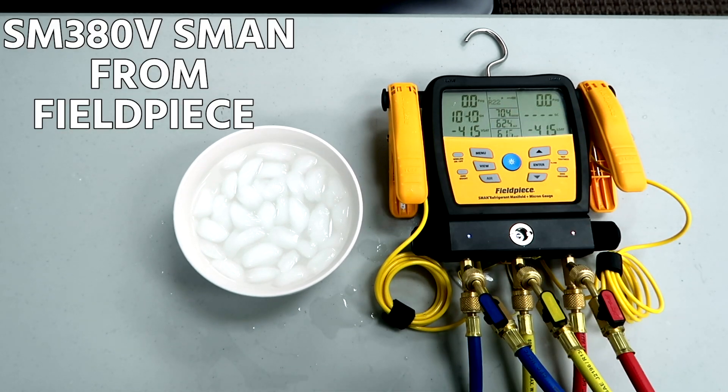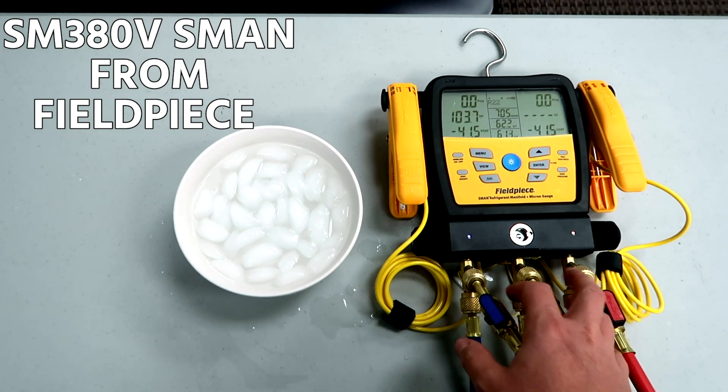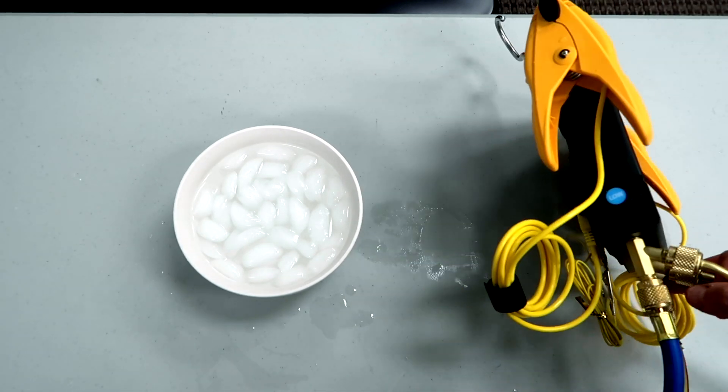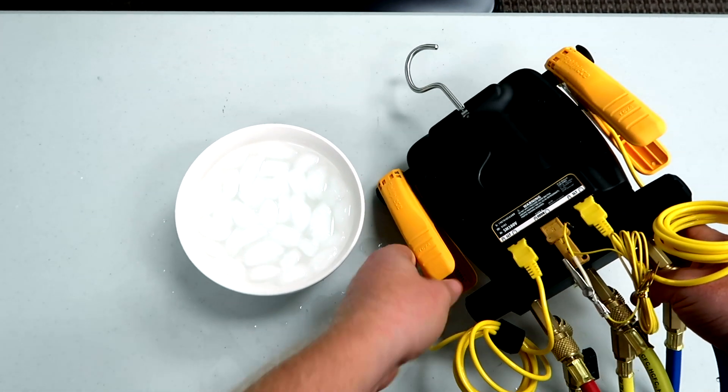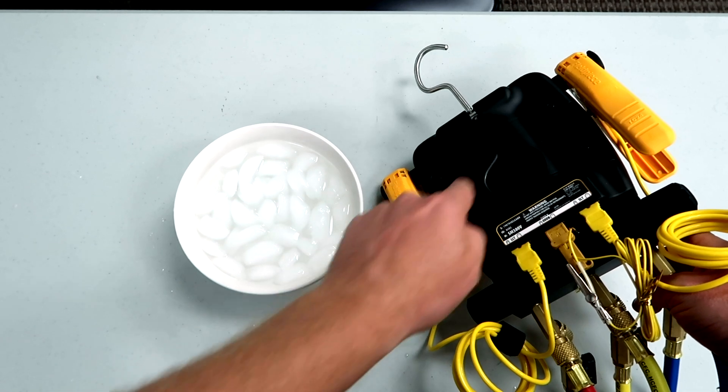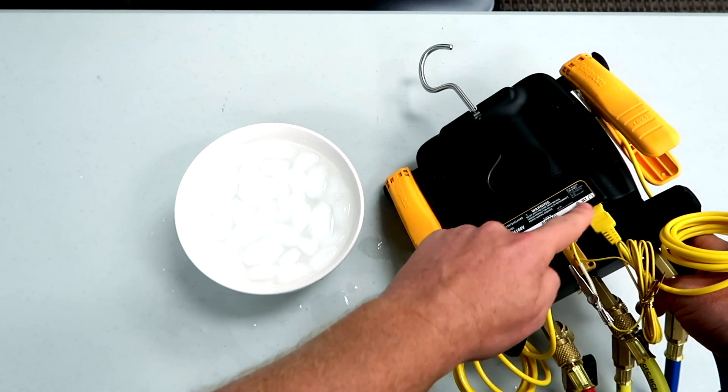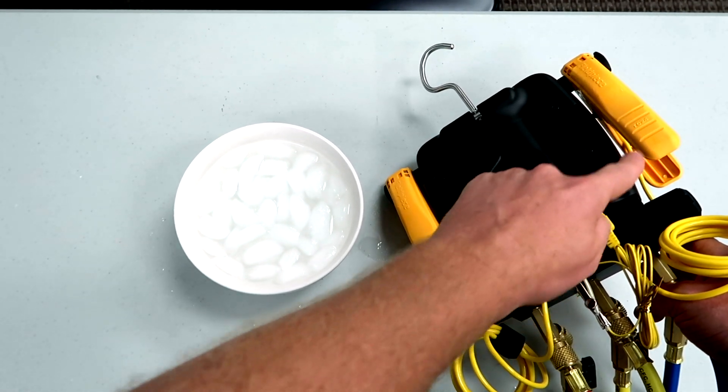This is the S-Man 380V from Fieldpiece, currently one of my favorite manifolds in the marketplace today. It works with the wireless Job Link probes as well as standard connected thermocouple probes, and when you're working with thermocouple probes like these you have to calibrate them periodically.